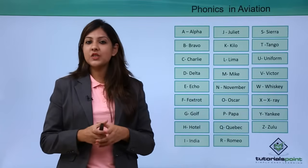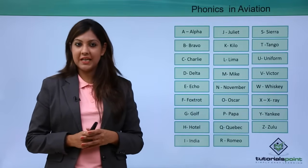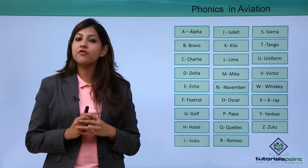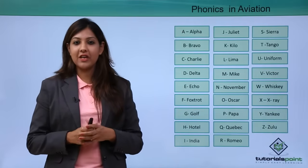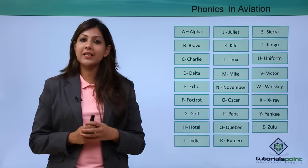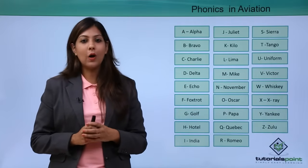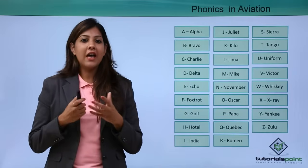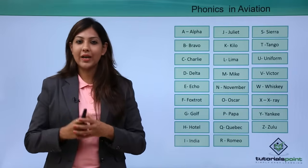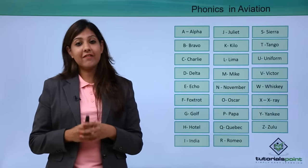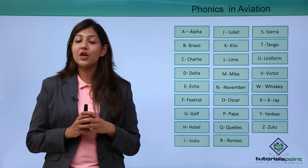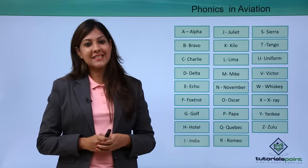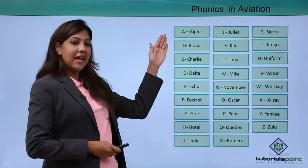Friends, those were certain abbreviations used in the aviation industry. Now coming to certain phonetics which are used in aviation, largely by all airlines all over the world. Generally ABC stands for apple, ball, cat, dog, etc., whereas in aviation it is not so — they have their own phonetic system. Let's take a look at that.